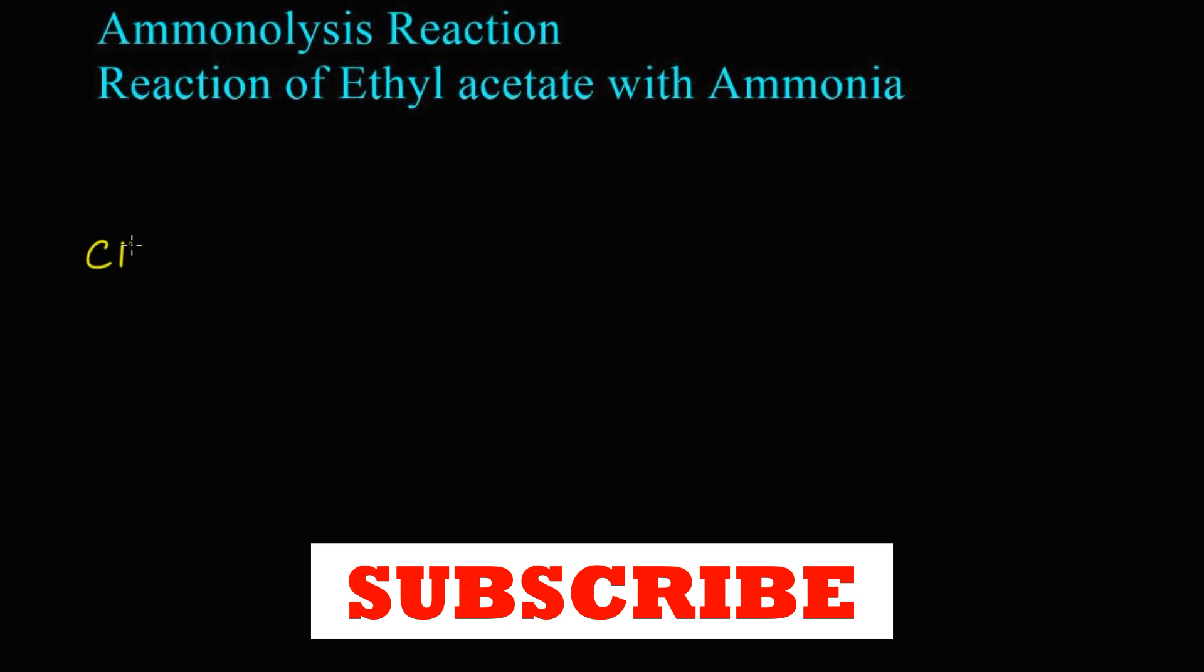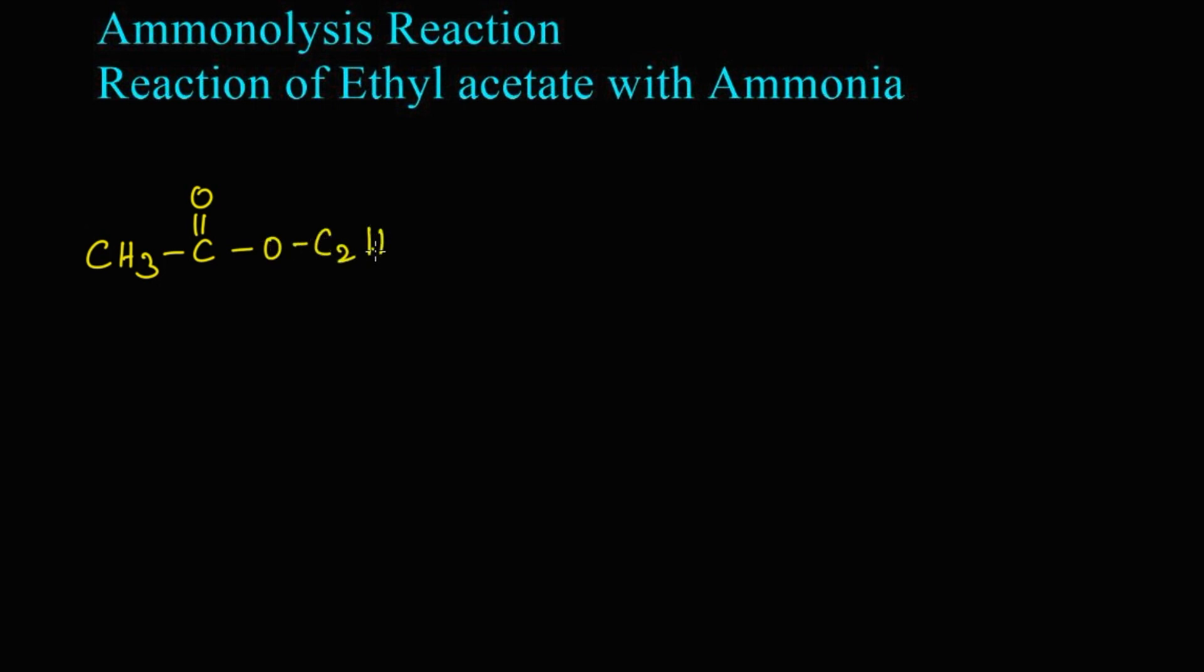Reaction of ethyl acetate with ammonia. This is also known as aminolysis reaction. CH3C double bond O O C2H5, this is ethyl acetate. We are going to react it with ammonia NH3.